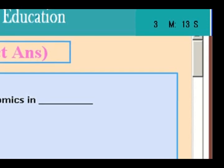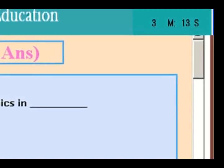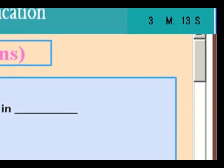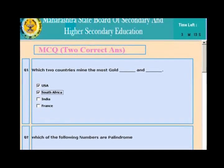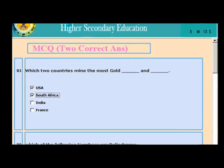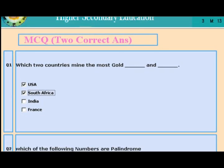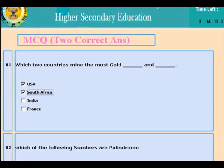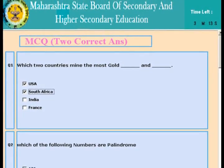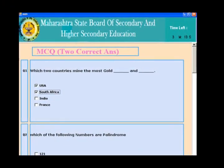For MCQ1, select only one answer — selecting more than one will cause you to lose marks. For MCQ2, select only two answers. If one of the two is correct, you get one mark; if both are correct, you get two marks; if none are correct, you get zero marks.